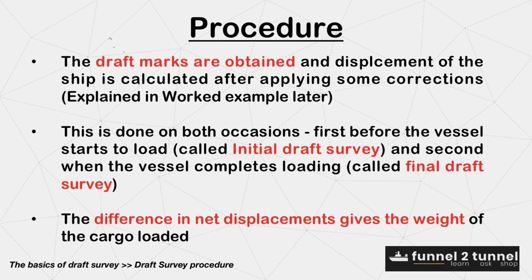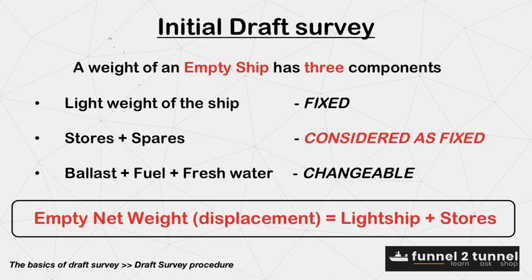The same procedure applies when the vessel reaches the discharge port. At the initial draft survey, the ship is empty and the weight of an empty ship has three components: namely the light weight of the ship, which is fixed; stores and spares, collectively known as constant, which is considered fixed; and ballast, fuel, fresh water, etc., which are changeable.